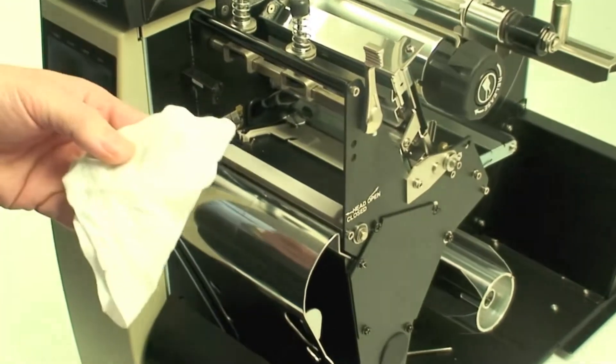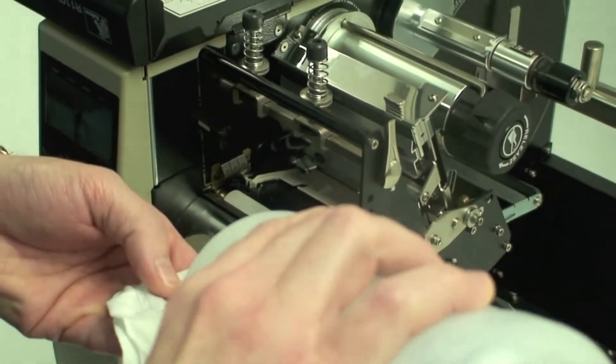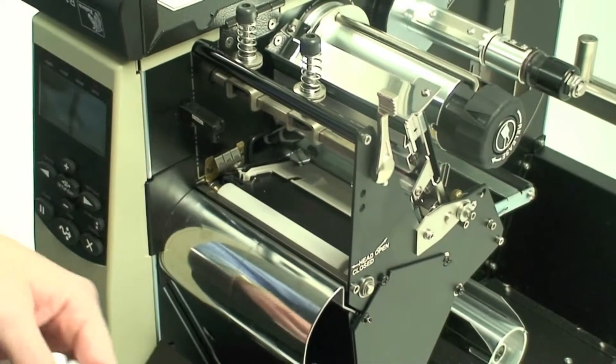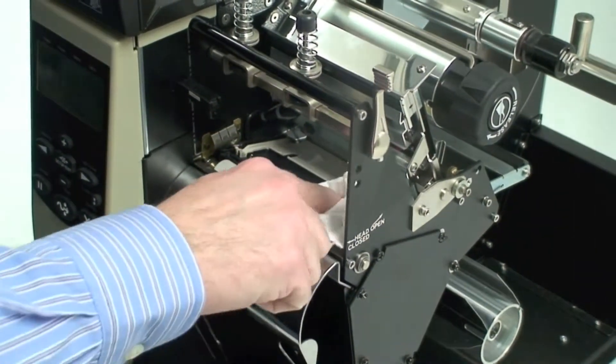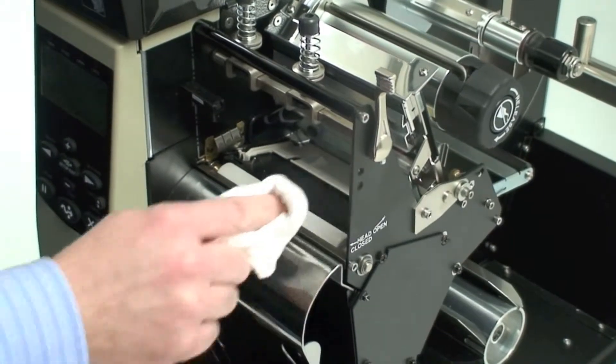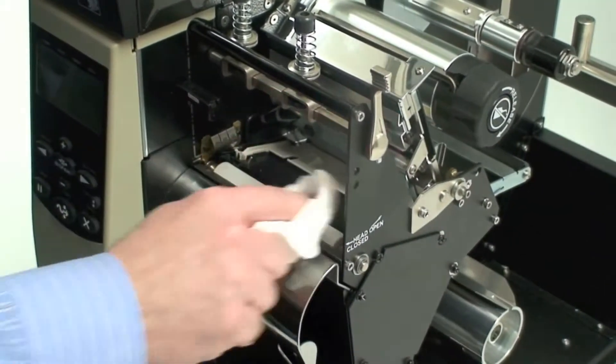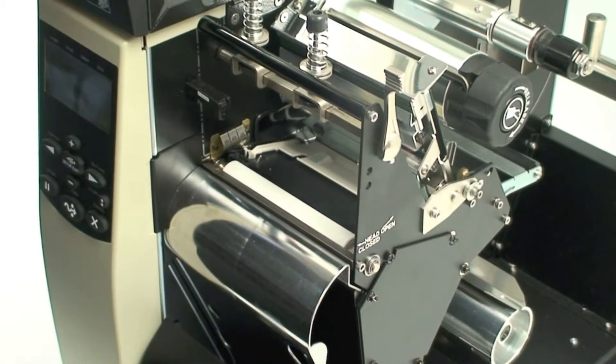You're going to do the same thing with a lint-free cloth and the isopropyl alcohol. You're just going to wipe across and then you can turn the platen roller with one finger and clean. And you'll notice when you're done because the platen roller will be fully cleaned.